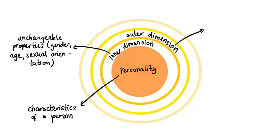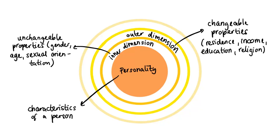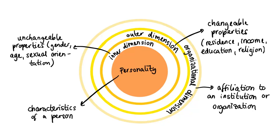The outer dimension focuses on the changeable properties such as residence, income, education or religion. Lastly, the outermost circle refers to a person's affiliation with an institution or organization. For example, affiliation with a university.